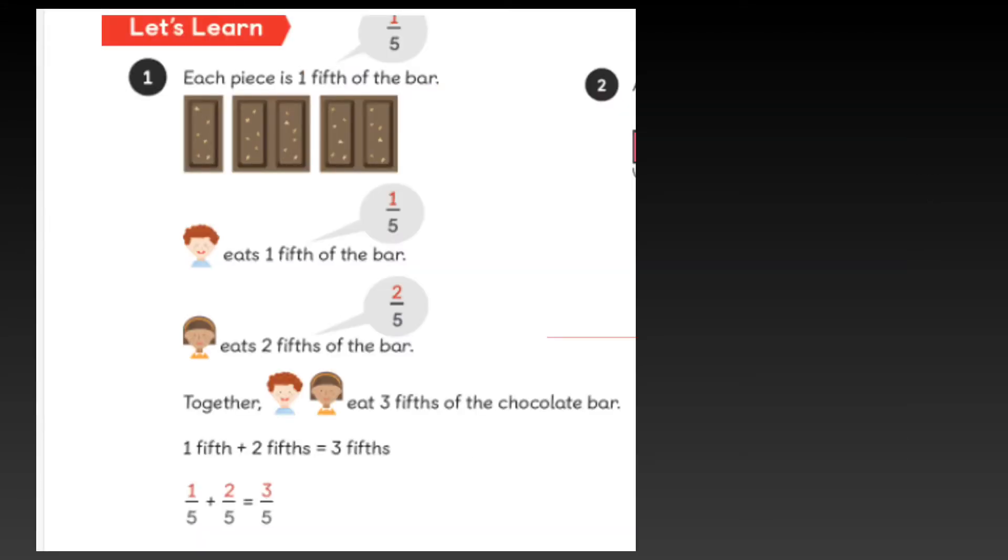Let's learn explains how to add these together. It says, each piece is one fifth of the bar. If one child eats one fifth of the bar and the other child eats two fifths of the bar, together, child A and B eat three fifths of the chocolate bar. One fifth and two fifths is equal to three fifths. And you can show this as one fifth add two fifths.